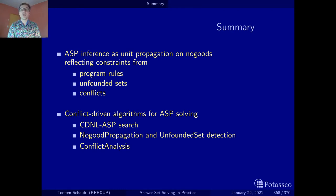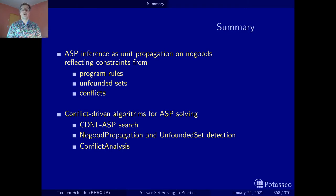No-goods are the building blocks of our algorithmic framework. We've seen the cDNL-based search algorithm, propagation by unit propagation and unfounded set, and finally conflict analysis. No-goods are really powerful in that — we use them a lot in the algorithm, and we've seen many more no-goods than we just get from programs, unfounded sets, and conflicts.